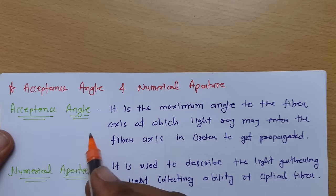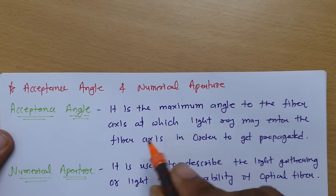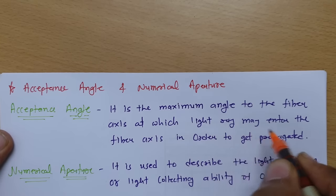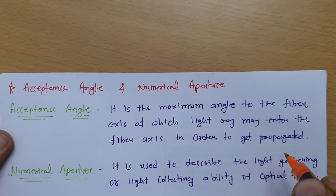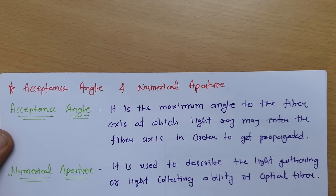Acceptance angle is the maximum angle to the fiber axis at which a light ray may enter the fiber in order to get propagated. Numerical aperture is used to describe the light gathering or light collecting ability of an optical fiber. Let us try to understand this with an optical fiber diagram so it will be more clear.